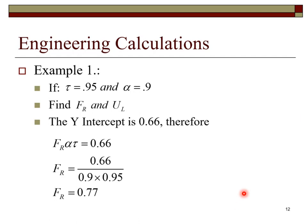Here in example one, we assume a transmissivity of 0.95 and an absorptivity of 0.9. We can then calculate the value for F sub R being equal to 0.77.